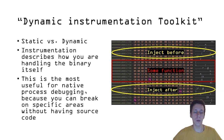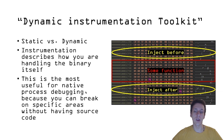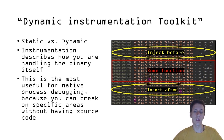Instrumentation describes how you are handling the binary itself, where you can create functions that you inject before a function, after a function, or even in the middle of the function directly, altering its functionality. Additionally, you can replace the functionality of the function, inject other data into the function, or even call other functions from outside the scope of the project.